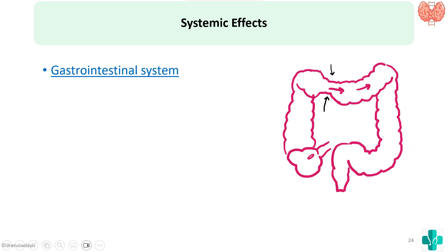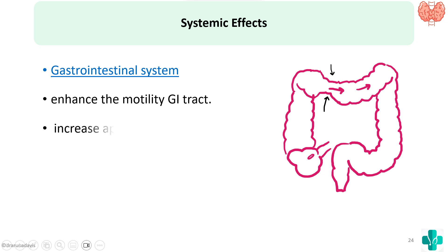On the gastrointestinal system, thyroid hormone enhances the motility of the GI tract. That is why in hypothyroidism the patient has constipation, whereas in hyperthyroidism patients complain of diarrhea. It also increases appetite and food intake. In hyperthyroidism there is increased appetite but weight loss; in hypothyroidism there is decreased appetite but weight gain.